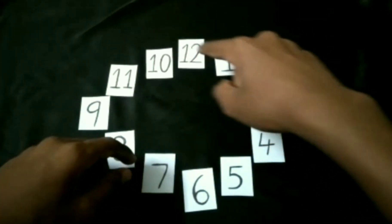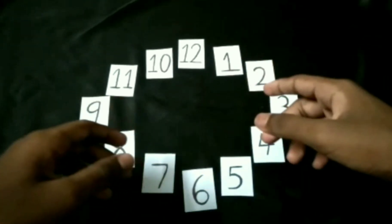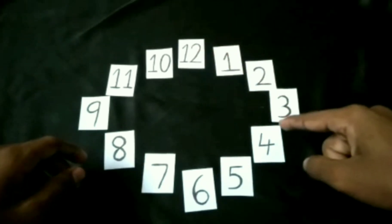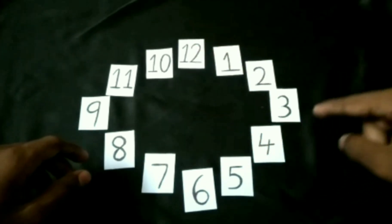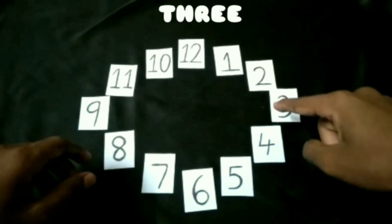Here I have made the numbers 1 to 12 in a circular clockwise manner. You can think of any number in this and spell it out. Keep your point finger on the screen and spell one by one in a clockwise direction. For example, if you think of the number 3, then spell T-H-R-E-E.